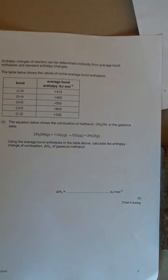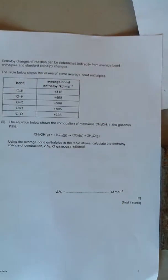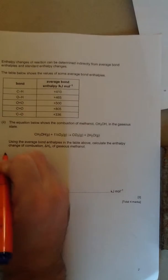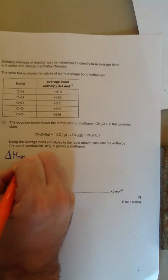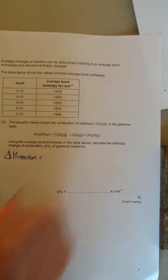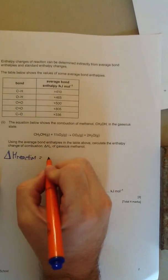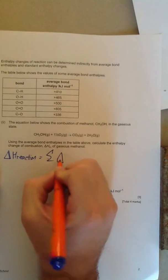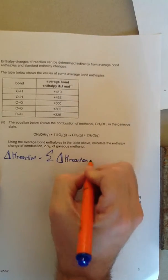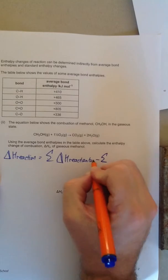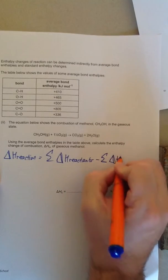For the second one, it gives us the words bond enthalpy. Whenever we see bond enthalpy, we use a slightly different equation. The delta H of a reaction when you're given bond enthalpy is the sum of all the enthalpies of the reactants minus the sum of all the enthalpies of the product.